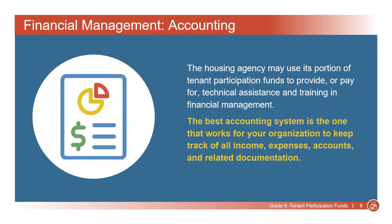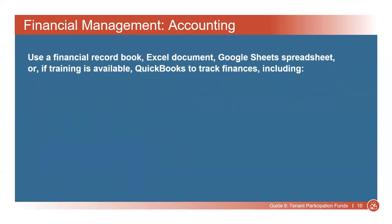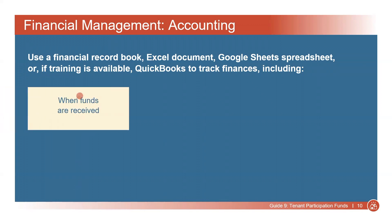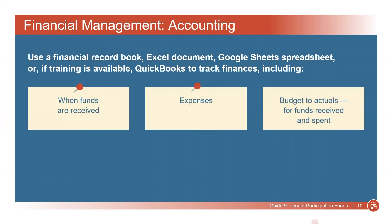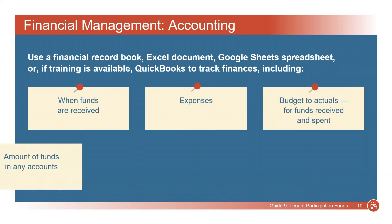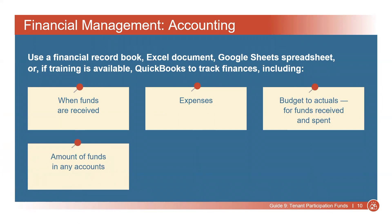Your Resident Council can use a financial record book, Excel document, Google Sheet spreadsheet, or, if training is available, QuickBooks to track finances including: when funds are received, expenses, budget to actuals — meaning how the Resident Council's initial budget compares to the actual amount of money that was received or spent — and the amount of funds in any accounts.